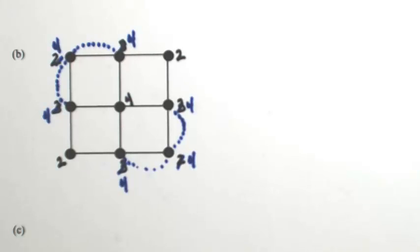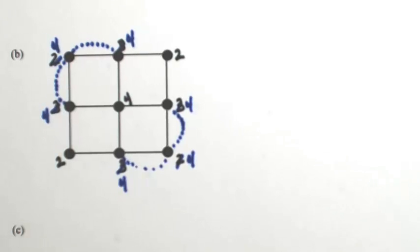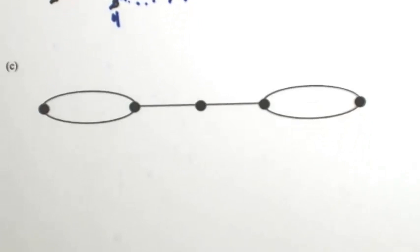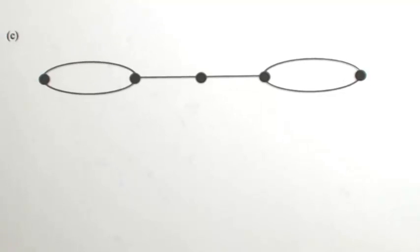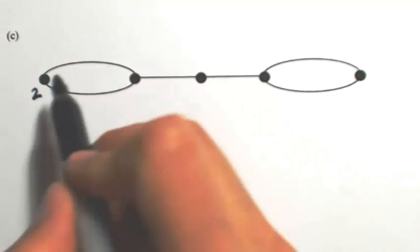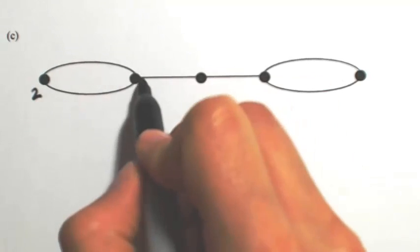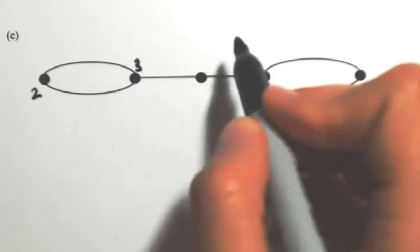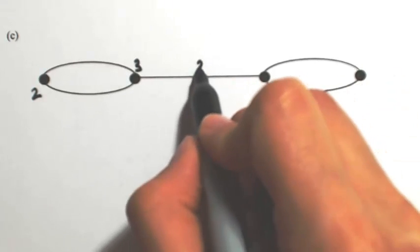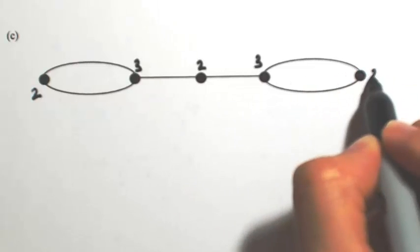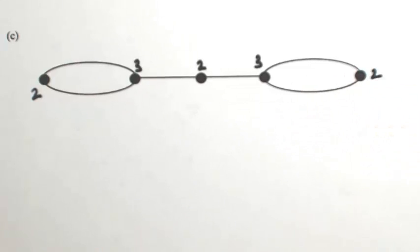Let's look at one more — same idea, count the degrees first. On the left side I have a degree of two; the right side has one, two, three; in the middle I have a two, three, and a two.